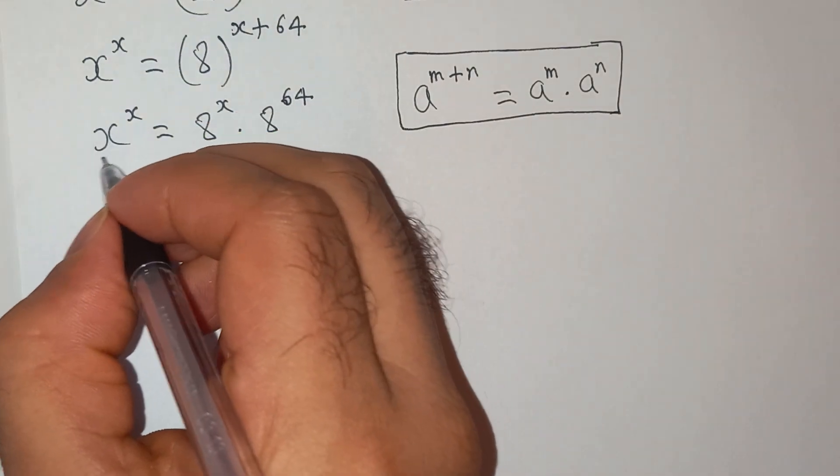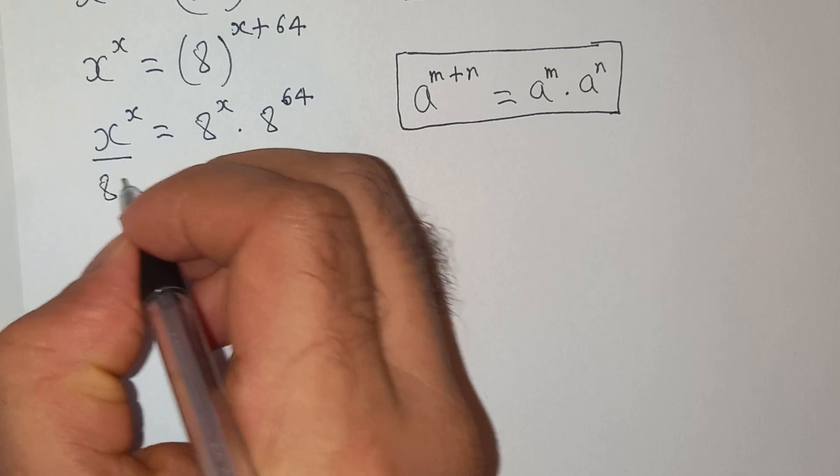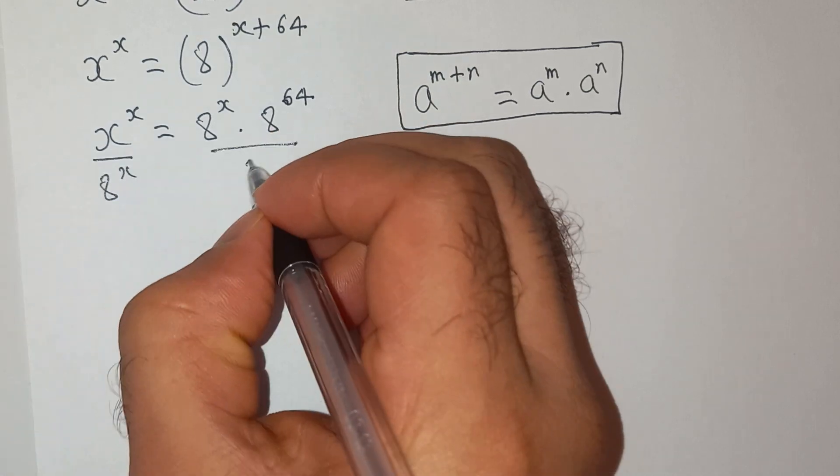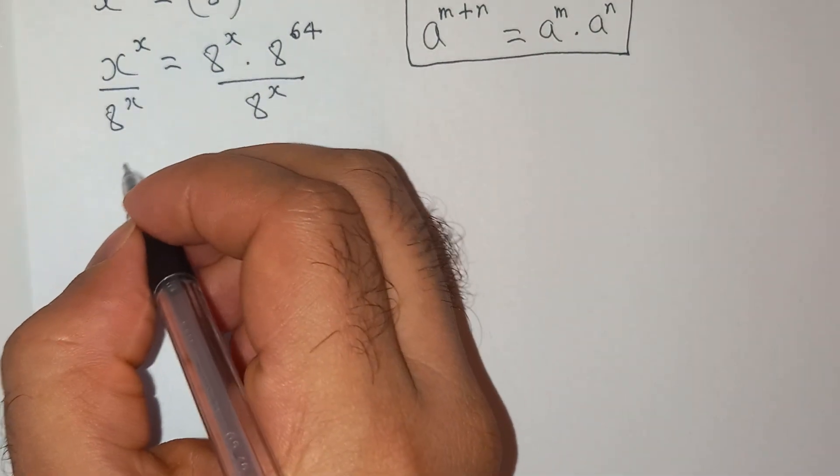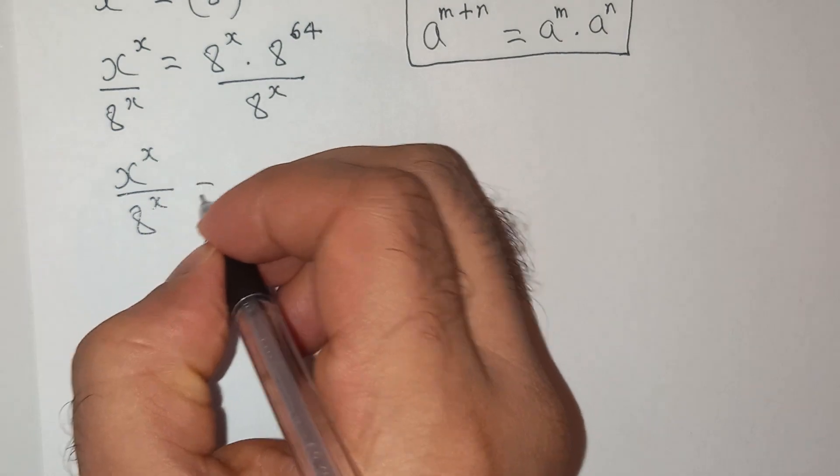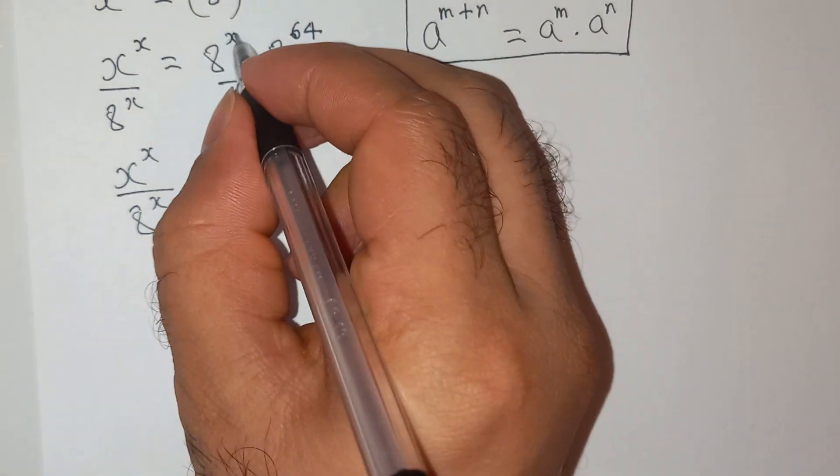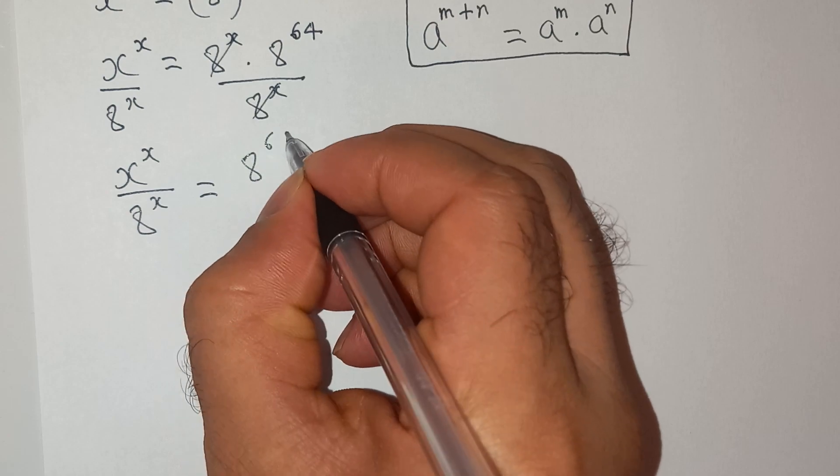Now we can divide left hand side and right hand side by 8 power x. So this will be x power x divided by 8 power x equals to, this will cancel and we are left with 8 power 64.